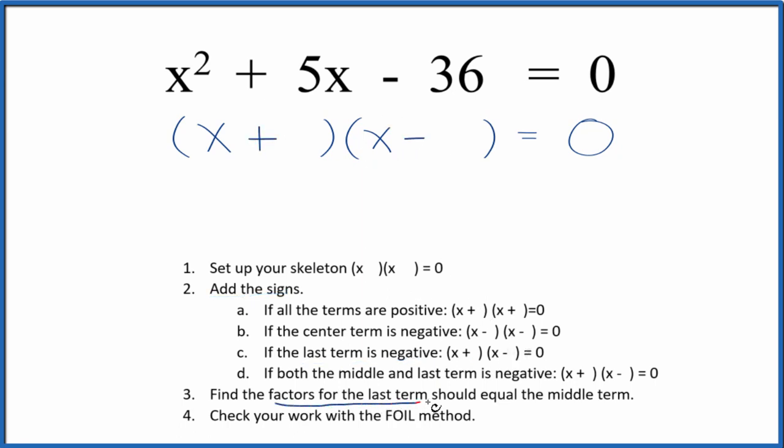Now we can find the factors for the last term. That's the negative 36. And if we add them together, we want to get the middle term. That's the 5. So I think of factors of 36. So if I write the factors of 36, this is what I get. So each one of these would equal 36.